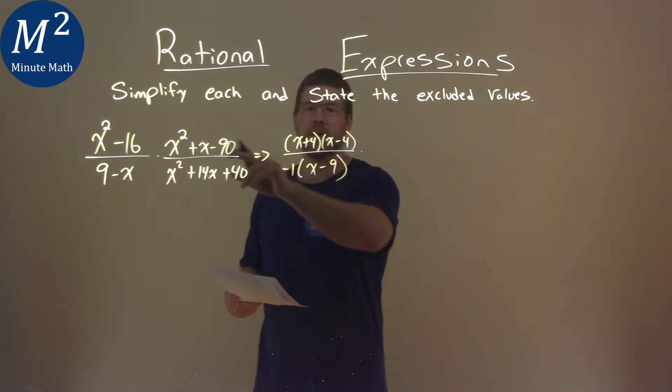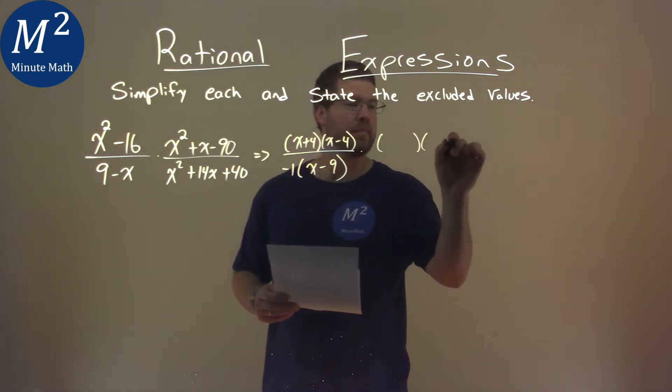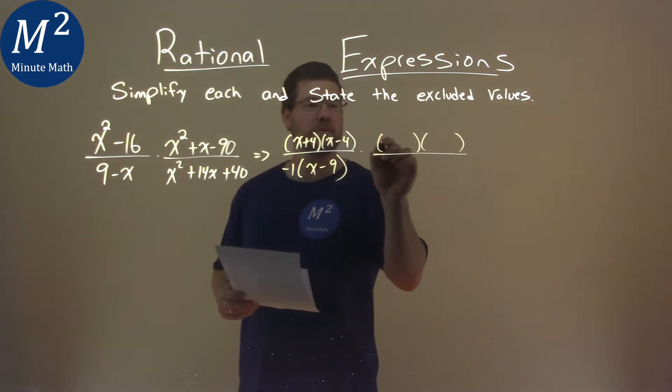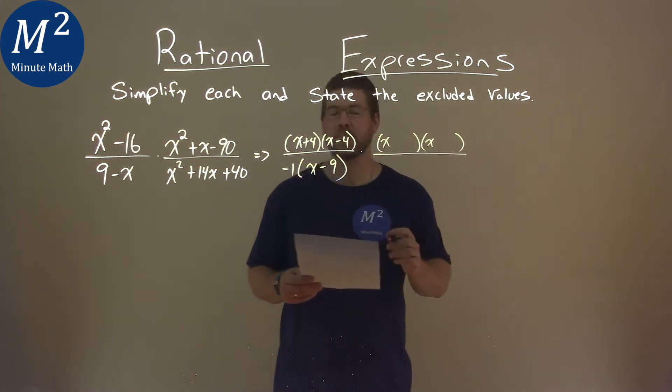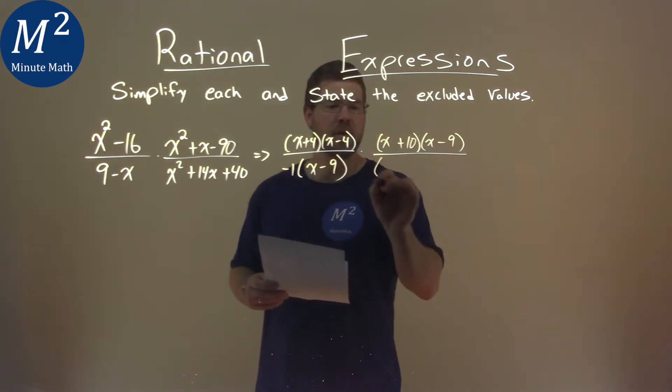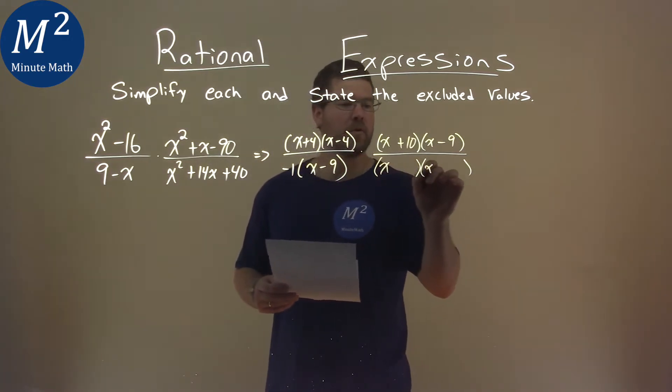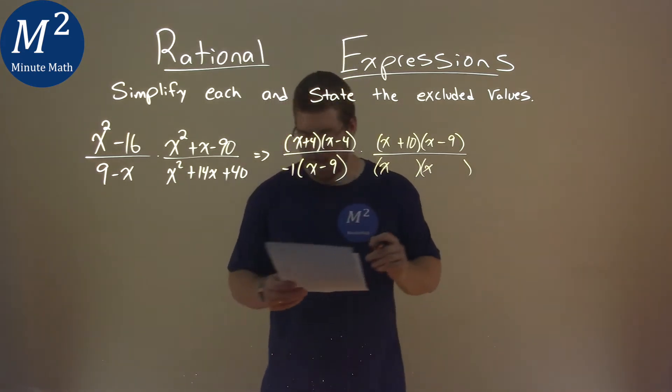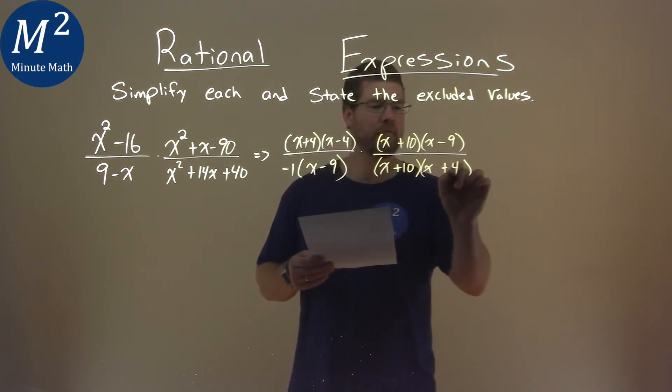Multiply it out. Let's factor this x squared plus x minus 90. What two numbers multiply to be negative 90 but add to be positive 1? That's positive 10 and negative 9. Same thing with our denominator. Let's factor that out. What two numbers multiply to be 40 but add to be 14? That's 10 and positive 4.